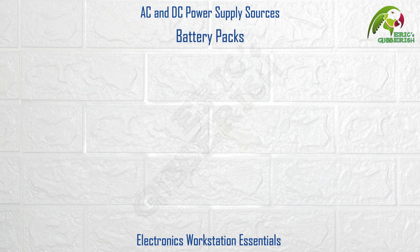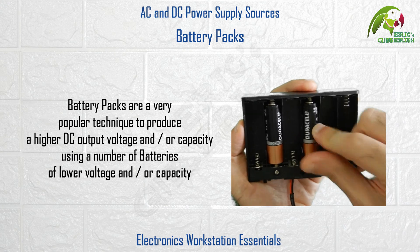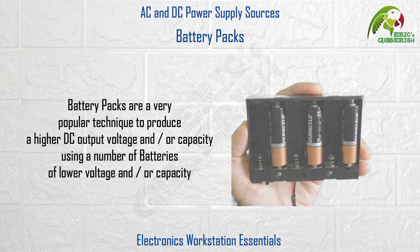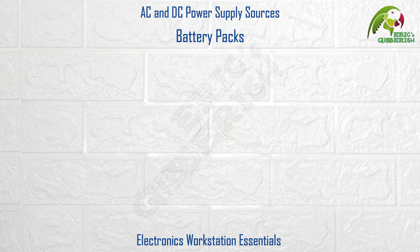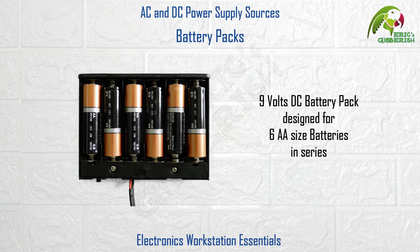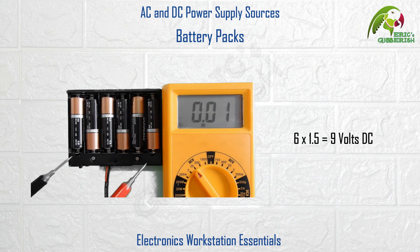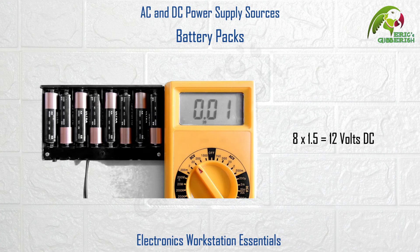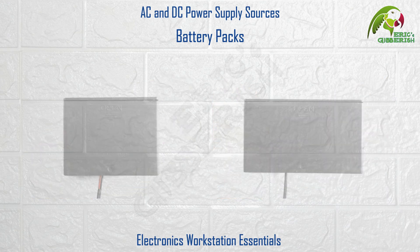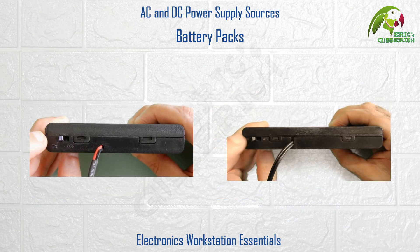Battery packs. Battery packs are a very popular technique to produce a higher DC output voltage and/or capacity using a number of batteries of lower voltage and/or capacity. Like this 9V DC battery pack designed for 6 AA size batteries in series — so 6 x 1.5V equals 9V DC. Or this 12V DC battery pack designed for 8 AA size batteries in series — so 8 x 1.5V equals 12V DC. Both come with a protective lid and a power switch to turn the battery pack on and off.